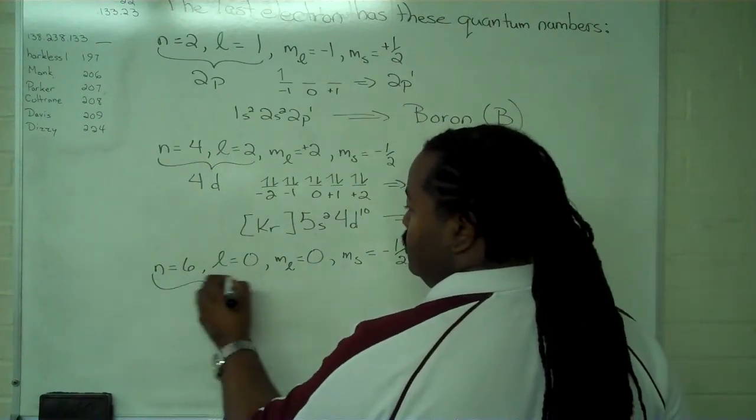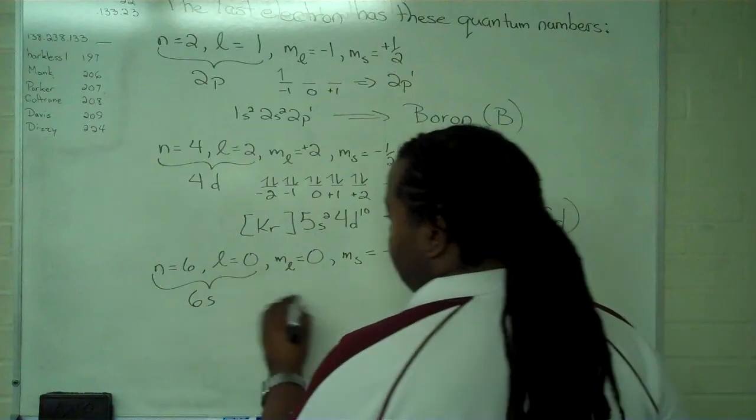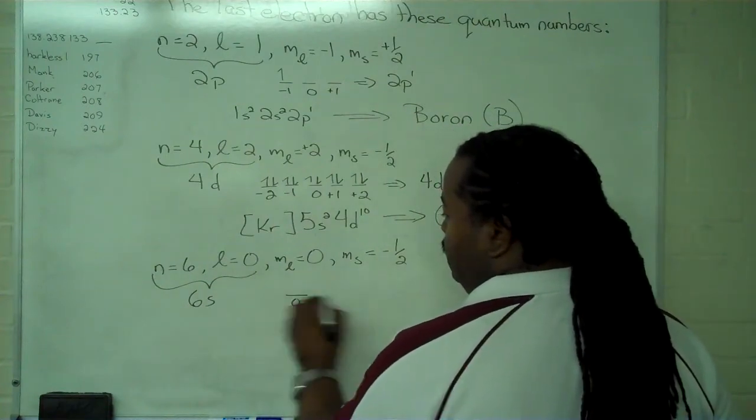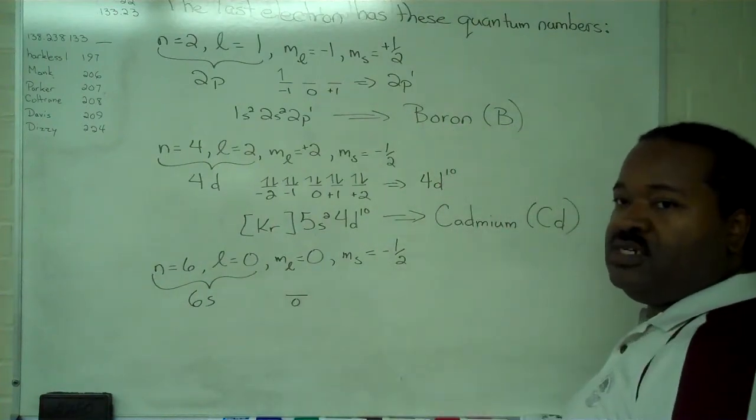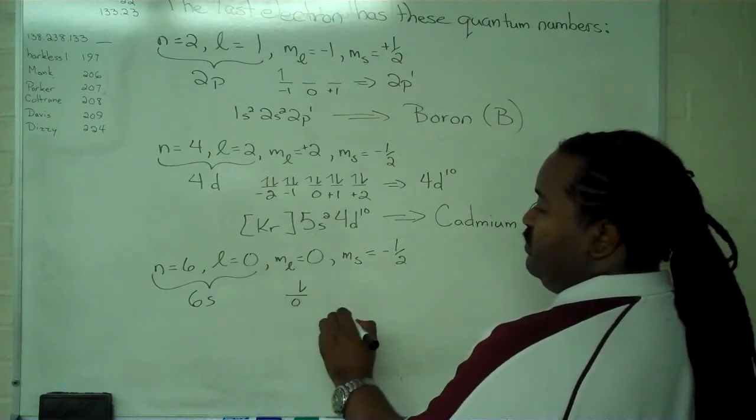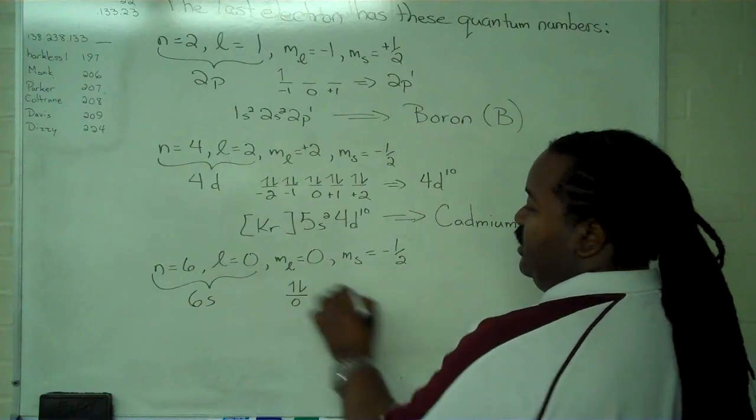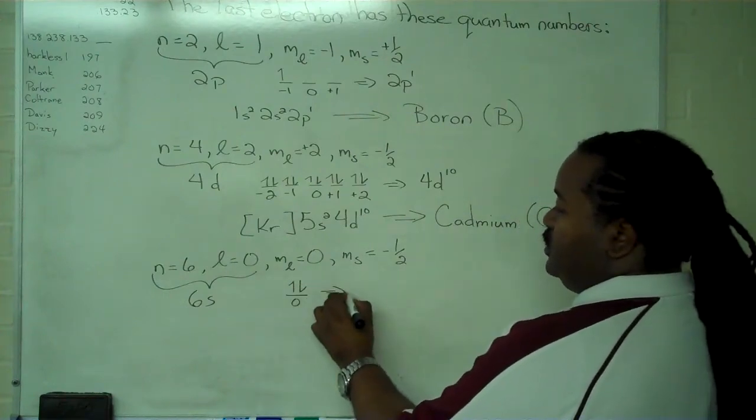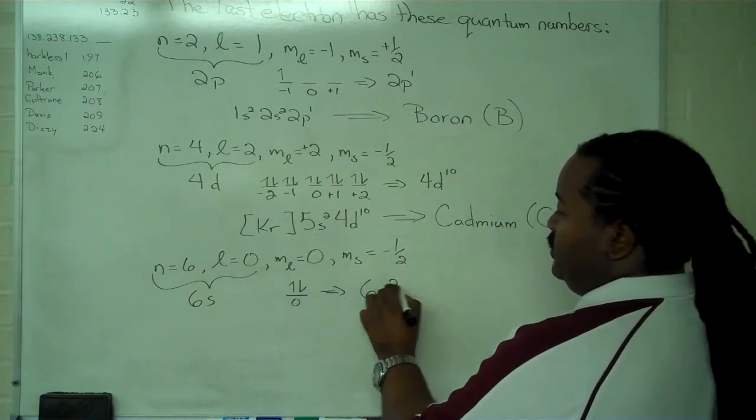So our last orbital is a 6s. We have only the single sub-orbital in our s shell, and the minus 1 half on the spin means we have a spin down. That requires us to have a spin up first. And so we now know that the last term is 6s, 2.